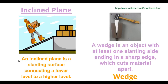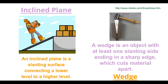Now let's talk about the wedge. The wedge is an object with at least one slanting side ending in a sharp edge which cuts materials apart. If you look over here, we're just going to pretend like this is a whole piece, and then the wedge is put in right here and then it's hit with the mallet, and because of the slant of the wedge, it separates these two pieces.